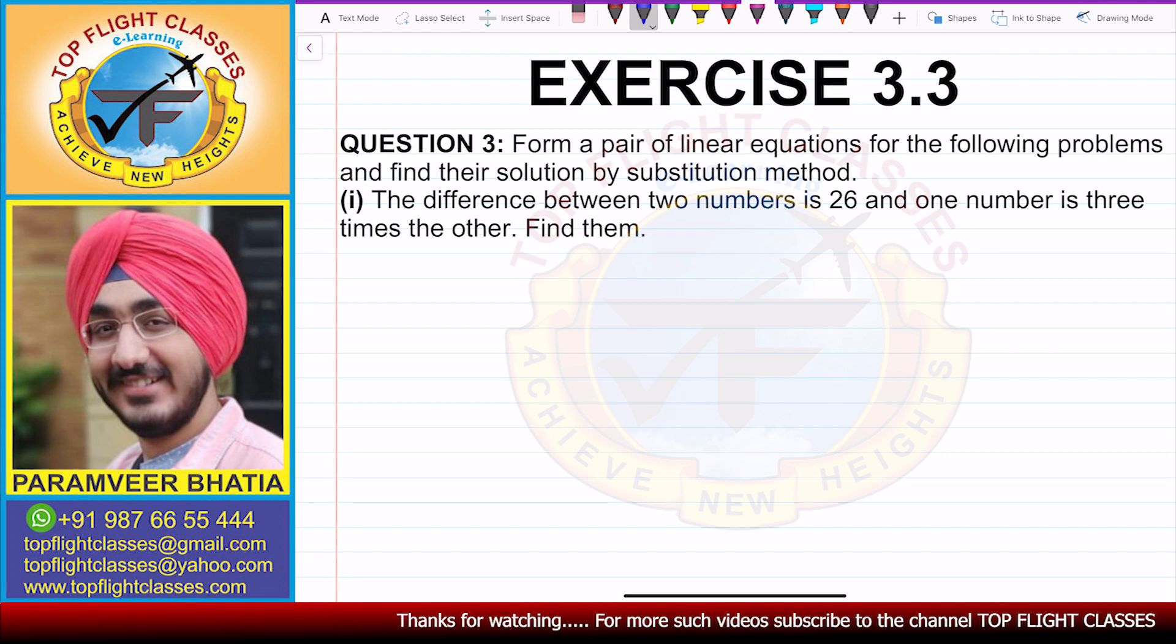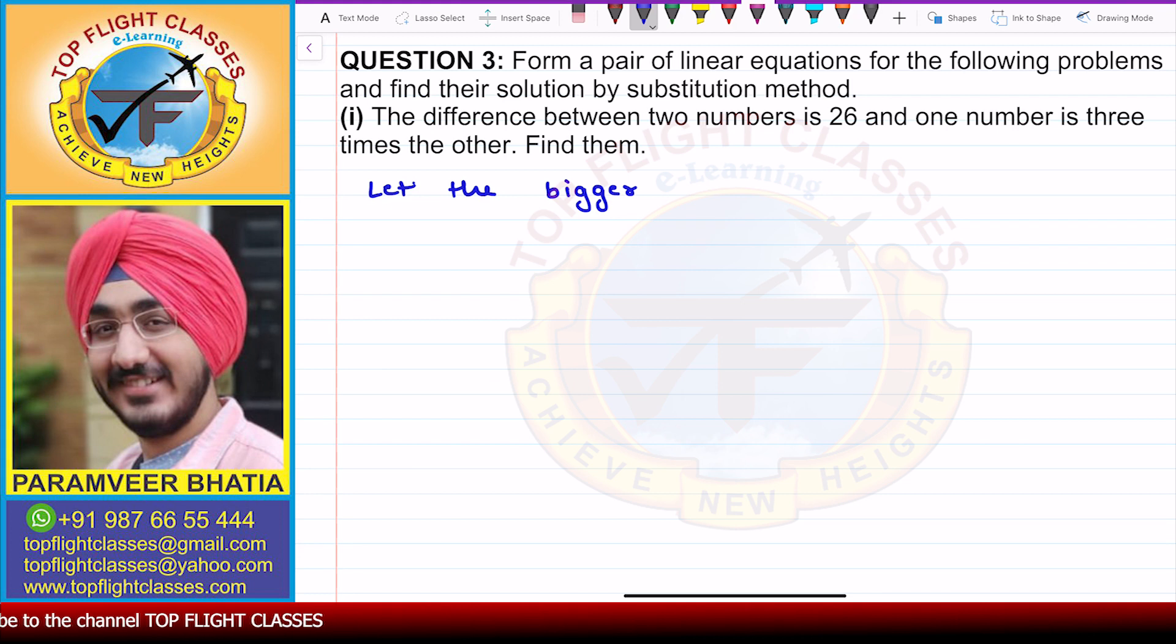The first part says the difference between two numbers is 26 and one number is three times the other. Then find them. So now let the bigger number or the larger number be x and the smaller number be y.